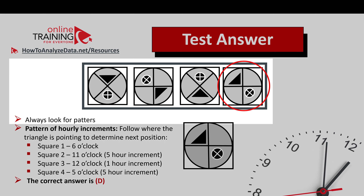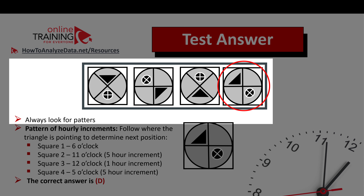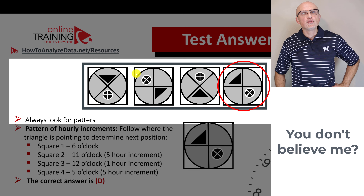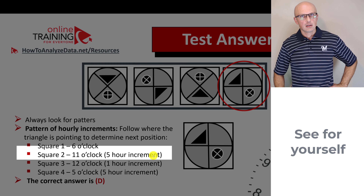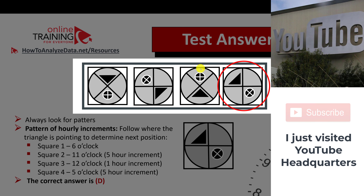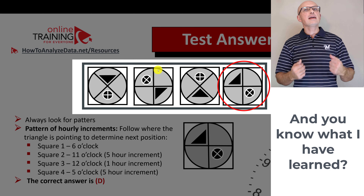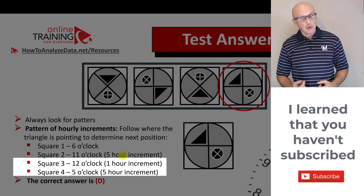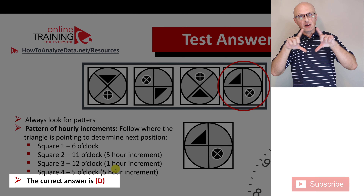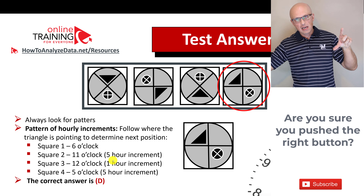Always look for patterns. In this case, we're dealing with a pattern of hourly increments, determined by where the triangle is pointing. In the first square, the triangle points to six o'clock. In the next square, it points to eleven o'clock — a five-hour increment from six o'clock. In the third square, the triangle points to twelve o'clock — a one-hour increment. So we alternate between five-hour and one-hour increments. The next shape uses the five-hour increment again, bringing us to five o'clock position. The correct answer is choice D.